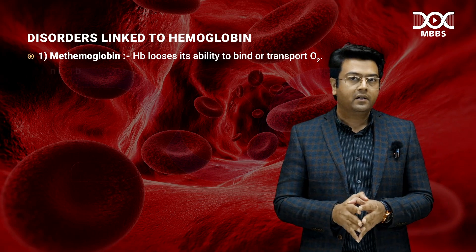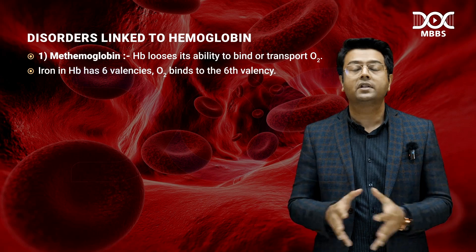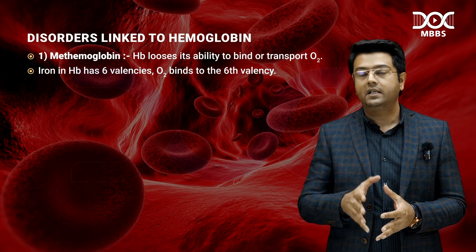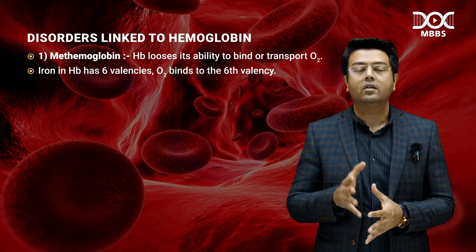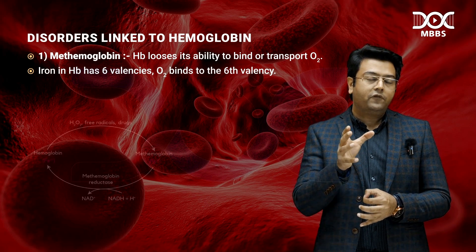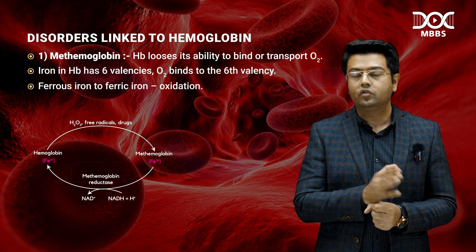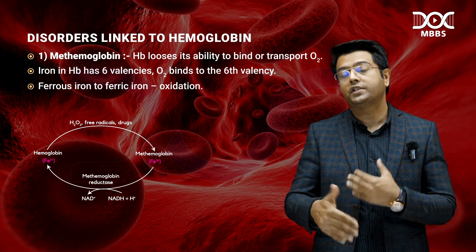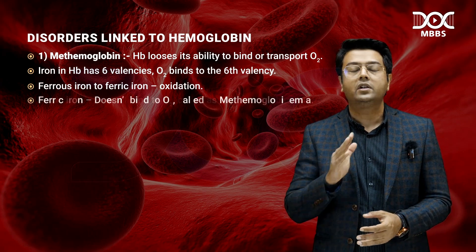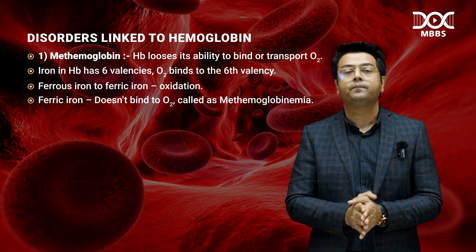The iron in hemoglobin has six coordination numbers or six valencies, and the sixth valency is responsible for binding oxygen. If ferrous iron of the heme is converted to ferric iron — meaning oxidation has occurred — this ferric iron will not be able to bind oxygen.